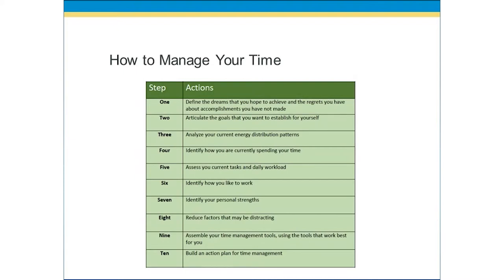From there, we'll move into step nine, where you assemble your time management tools — tools we'll talk about shortly — using those tools that work best for you in the ways you like to work. And finally, step ten is to build an action plan for time management: looking at how you currently spend your time, what your current tasks and workload are, understanding how you like to work and your personal strengths, and putting a plan together to eliminate distractions and put the right tools into practice so that you can manage your time in the most effective manner.